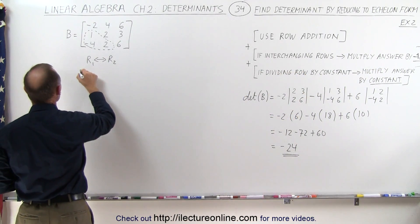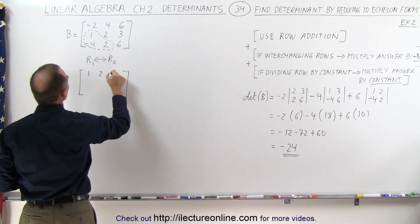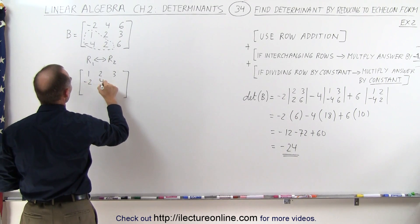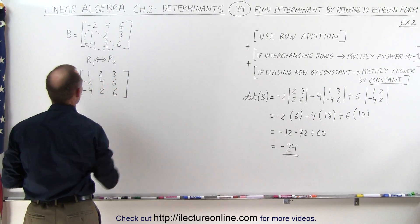When we do that, we get the following matrix. So we get 1, 2, 3 in the first row, minus 2, 4, 6 in the second row, and minus 4, 2, and 6 in the third row.